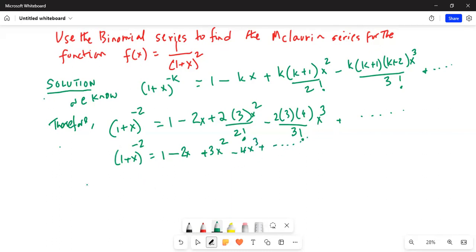Therefore, (1+x)^(-2), the Maclaurin series is Σ(n=0 to ∞) (-1)^n(n+1)x^n. Just to make sure everybody is on the same page.